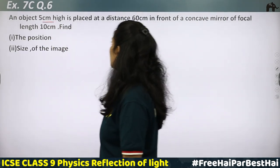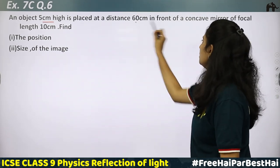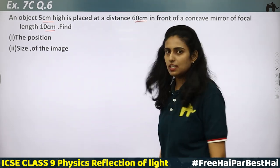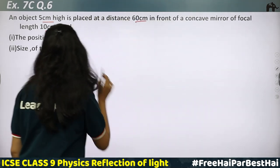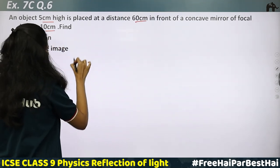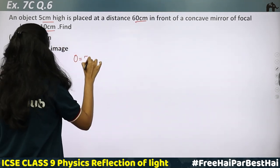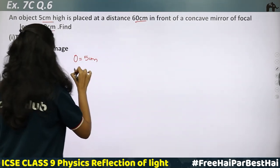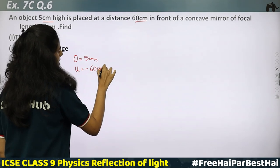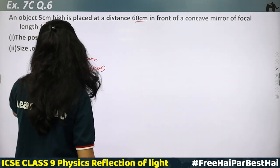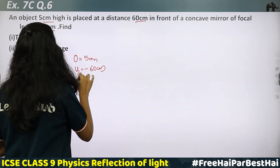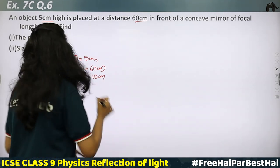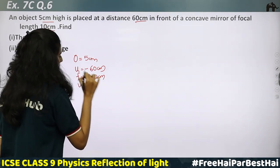Exercise 7C, Question 6: An object 5 cm high is placed at a distance of 60 cm in front of a concave mirror of focal length 10 cm. Find the position and size of the image.